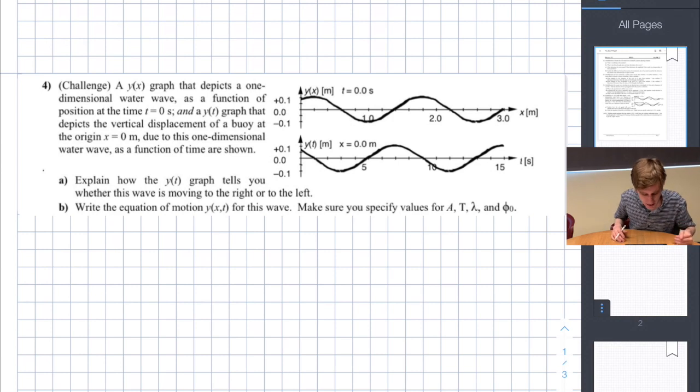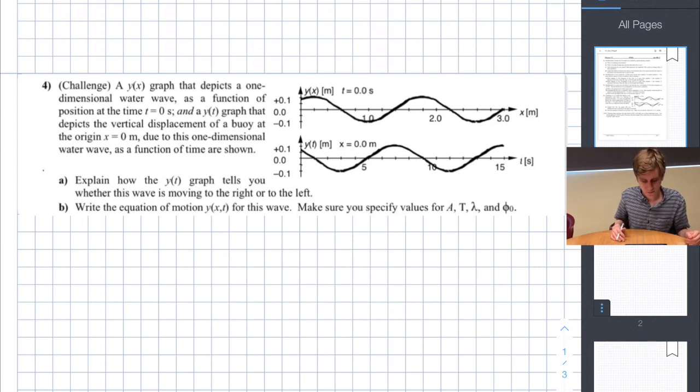Let's start with part A. Explain how the y of t graph tells you whether this wave is moving to the right or to the left. If we read the problem carefully we can see that the position graph shows us what the wave looks like at t equals zero. In other words this is a photograph of the wave at the initial point in time.